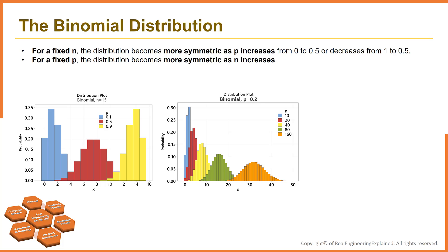For a fixed p, the distribution becomes more symmetric as n increases. In this graph, p is equal to 0.2. As n increases from 10 to 20 to 160, it becomes more symmetric.